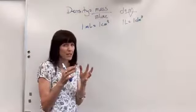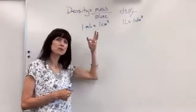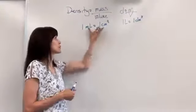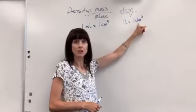A couple of conversions that will most likely help you when you're dealing with density. 1 mL equals 1 centimeter cubed. So we can really use those interchangeably. They're both units of volume and they're the same thing. 1 liter equals 1 decimeter cubed.